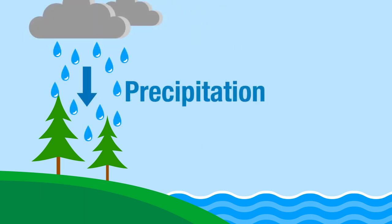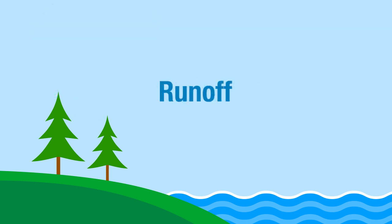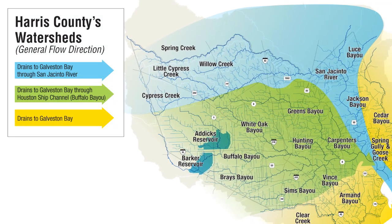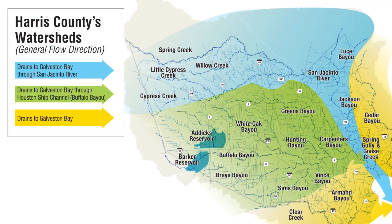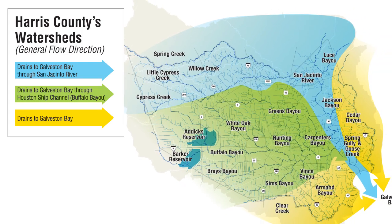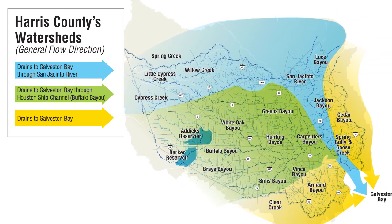Precipitation is water released from clouds in the form of rain, sleet, snow, or hail. Runoff is precipitation that does not get absorbed by plants or soil. Runoff accumulates into puddles and flows back into rivers and streams. This water cycle is studied by engineers over an area of landscape called a watershed.